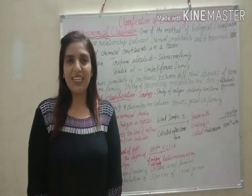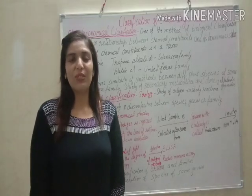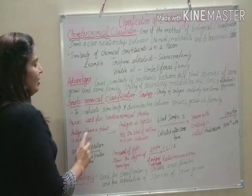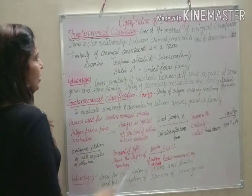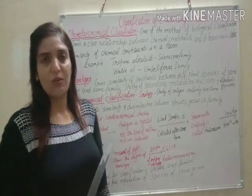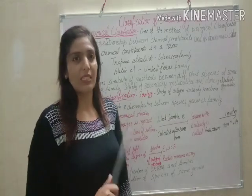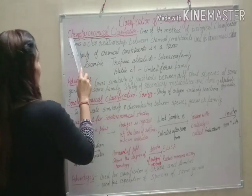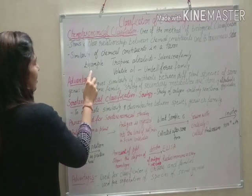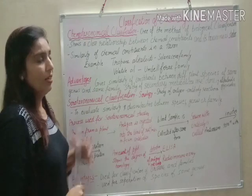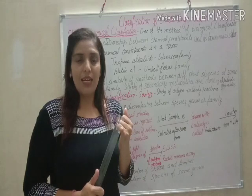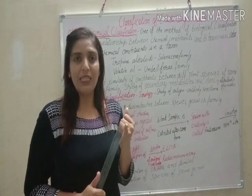Welcome to my channel Herbal Pharma. Today we will study chemo-taxonomical classification and sero-taxonomical classification. Chemo-taxonomical classification is one method of taxonomical or biological classification. The word 'chemo' means chemical, and 'taxonomical' refers to classification levels — phylum, class, order, family, genus, and species.